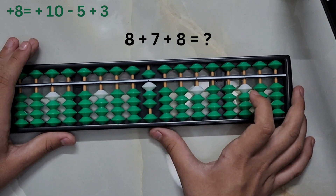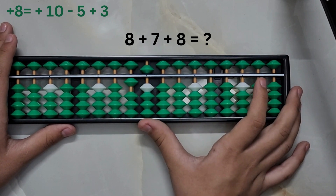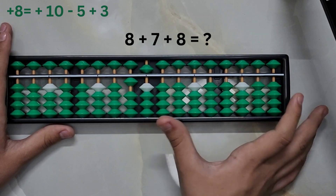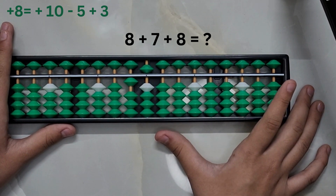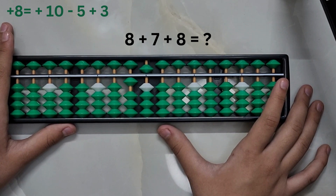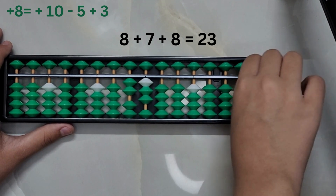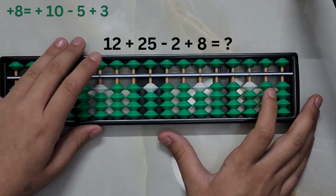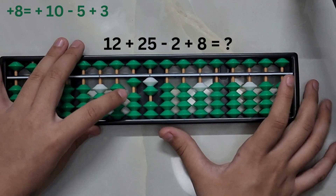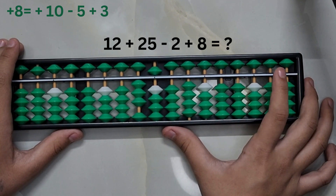8 plus 7: we cannot add 7 directly, so let's think of the big friend formula for adding 7, which is plus 10 minus 3. Now to add 8, we cannot add 8 directly, and the big friend formula for adding 8 is plus 10 minus 2 — we do not have enough beads in the lower deck to subtract 2. The small friend formula cannot be used because the number we want to add is 8, which is greater than 5. So we will take help from the combination formula: plus 10 minus 5 plus 3. Answer is 23.